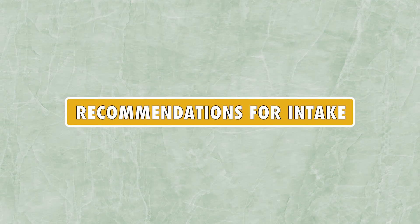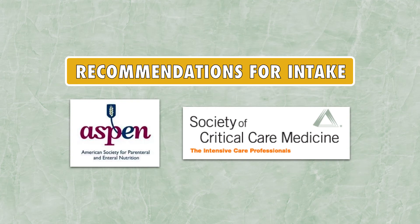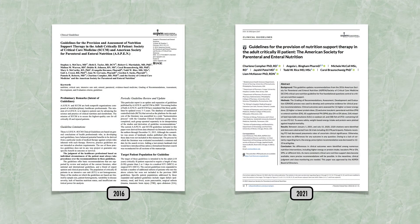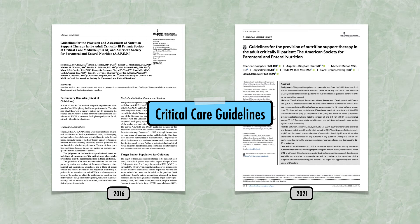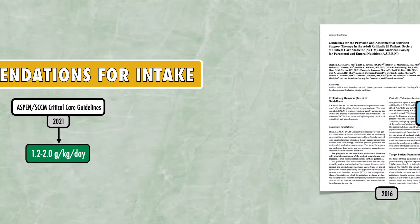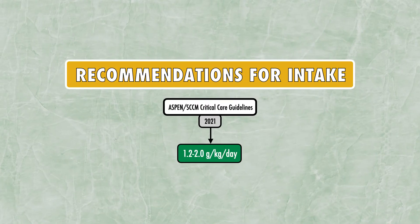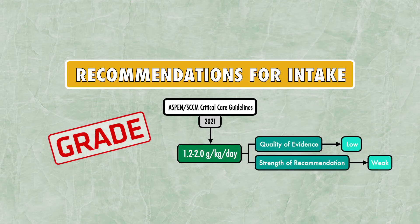The leading organizations for nutrition recommendations in the setting of critical illness are the American Society for Parenteral and Enteral Nutrition, or ASPEN, and the Society of Critical Care Medicine. These organizations joined together in the publication of clinical guidelines in both 2016 and 2021, which nutrition professionals in the United States typically refer to as the critical care guidelines. According to the 2021 guidelines, the recommended protein intake is 1.2 to 2.0 grams per kilogram per day. Using the GRADE process, the authors rated the quality of evidence as low and the strength of recommendation as weak.